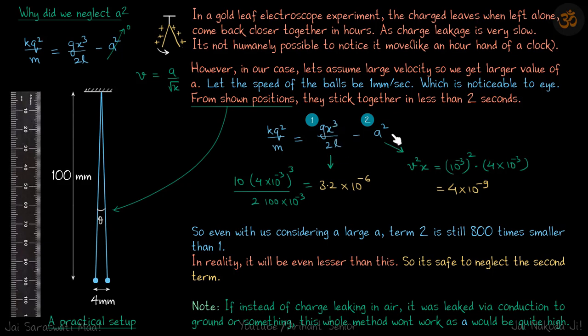Let's see these two terms. This term will be 10 into x which is 4 mm whole cube divided by 2 into length of the thread which is 100 mm. This comes to be this.